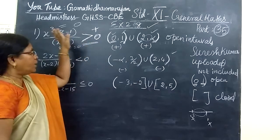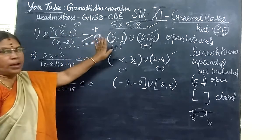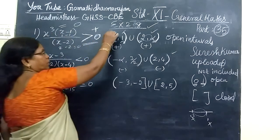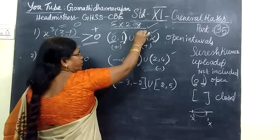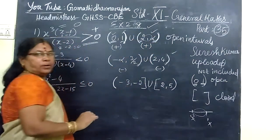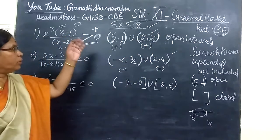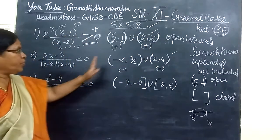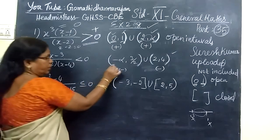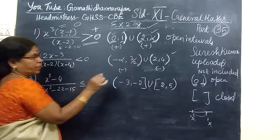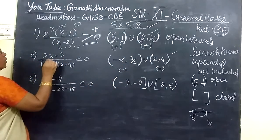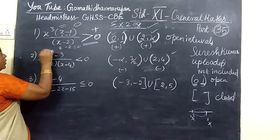So when it is in the domain, you are using open interval. Now the two is in the domain. For the second question, you will have minus infinity as well. You have 3 by 2, and you have to measure 3 by 2.